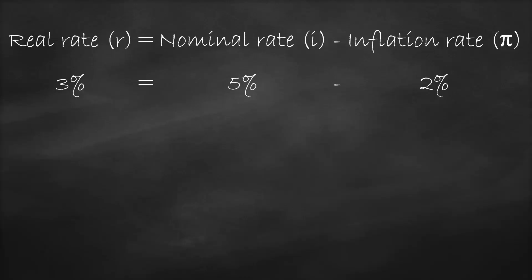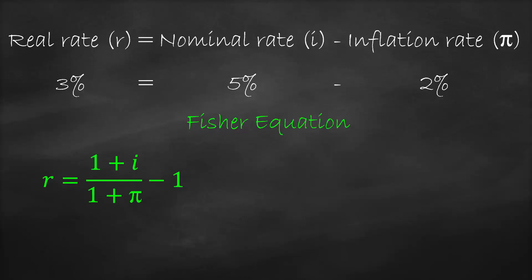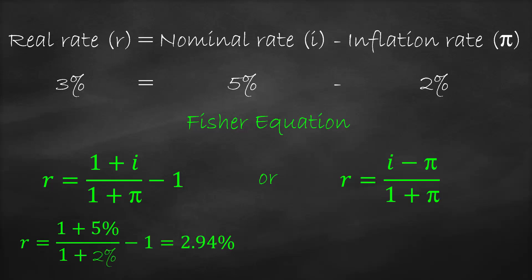For a more accurate calculation, we use the Fisher equation. The real rate equals (1 + nominal rate) divided by (1 + inflation rate), minus one. We can also rearrange this as: real rate equals (nominal rate minus inflation rate) divided by (1 + inflation rate). Using our example: (1 + 5%) divided by (1 + 2%) minus one gives us 2.94 percent. As you can see, this is very close to the simplified definition result of three percent.